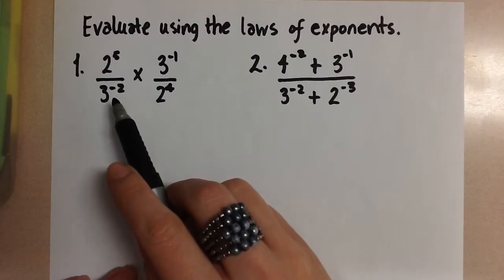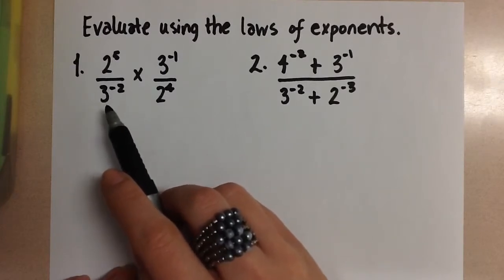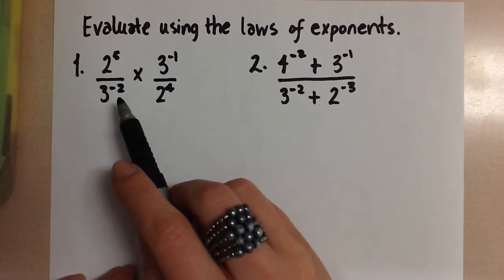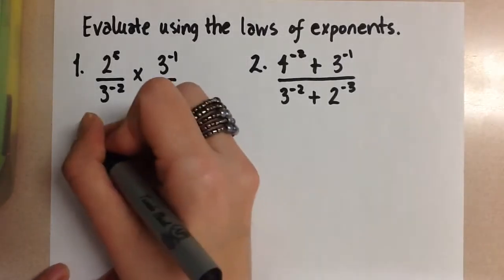We know that a negative exponent means we're going to take the reciprocal of the base. So here this 3 will turn into a 1 over 3 to have a positive 2 in the exponent. Let's go ahead and do that then.